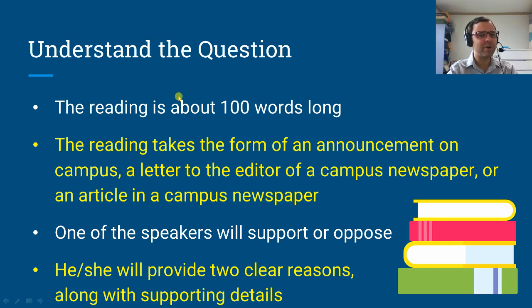Okay, so before I show you how to answer it, I want to talk a little bit about some of those things that never change. So in the Type 3 question, first you get a reading. This reading is about 100 words long. The reading takes the form of an announcement on campus, a letter to the editor of a campus newspaper, or an article in a campus newspaper. You're going to get one of these three. I haven't seen anything else in a long time.